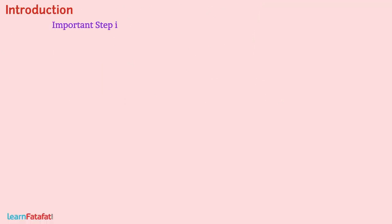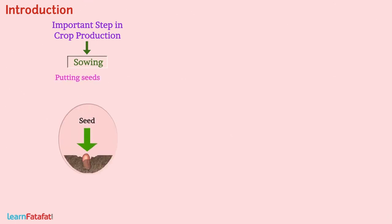The most important step in crop production is sowing. Putting seeds in the soil so that they can grow is called sowing. It is the most important part of crop production.